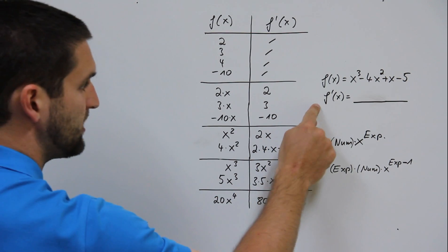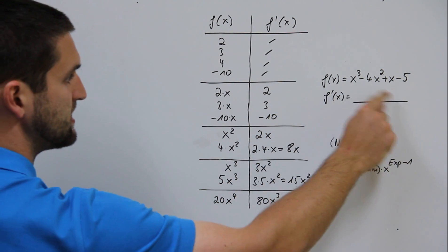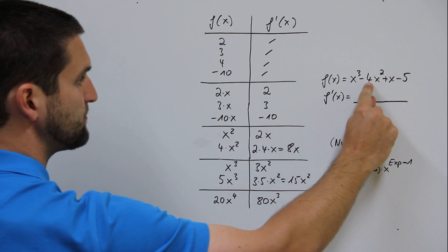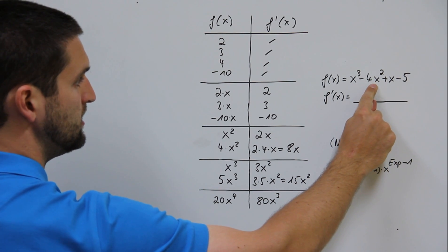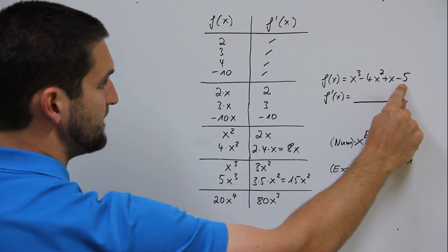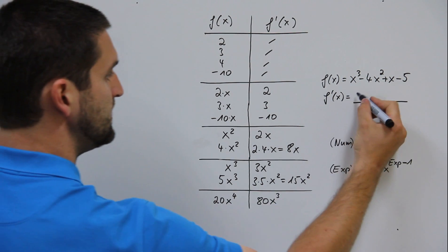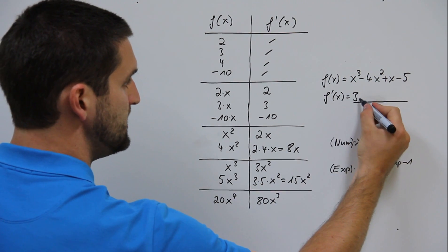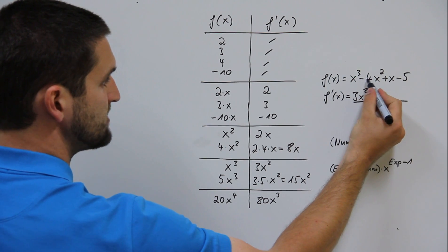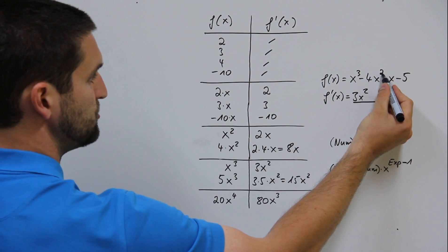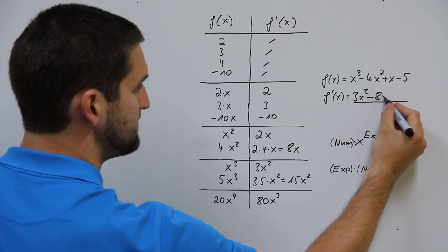Let's try it in a quick test. f of x equals x to the power 3 minus 4 times x to the power 2 plus x minus 5. x to the power 3 gives 3 times x to the power 2. Minus 4 times x to the power 2 gives minus 8 times x.